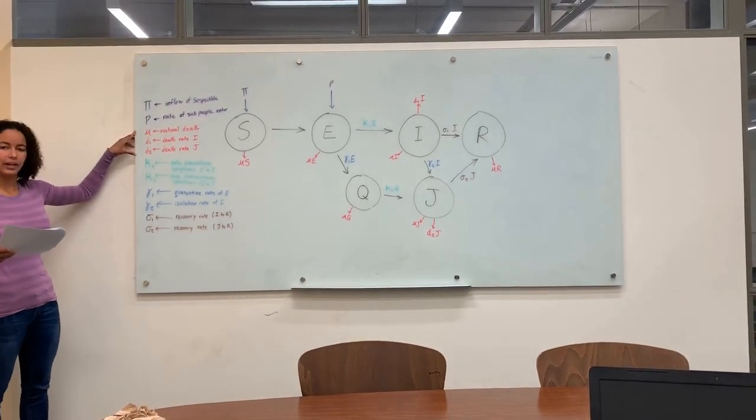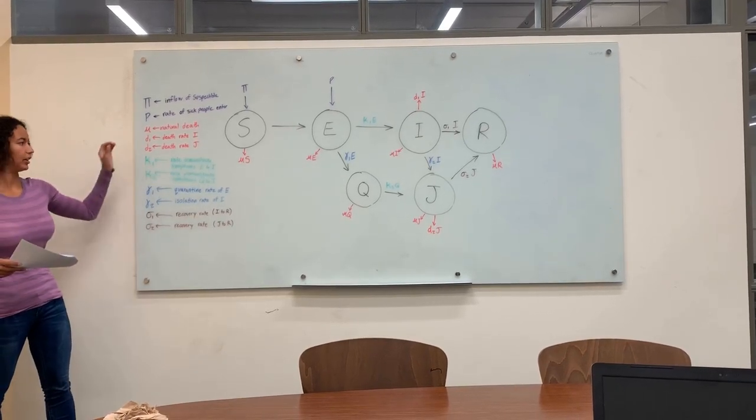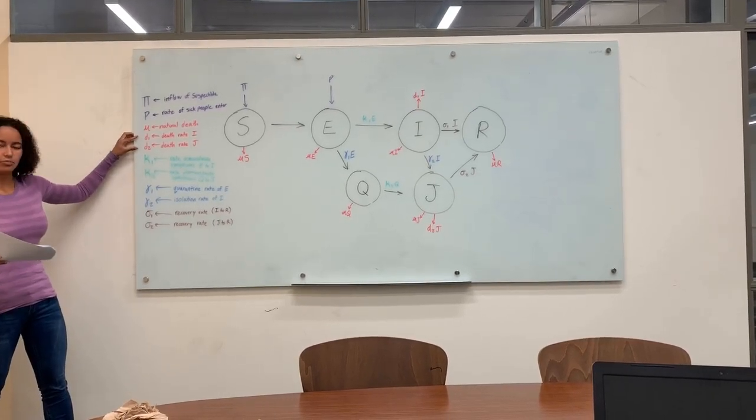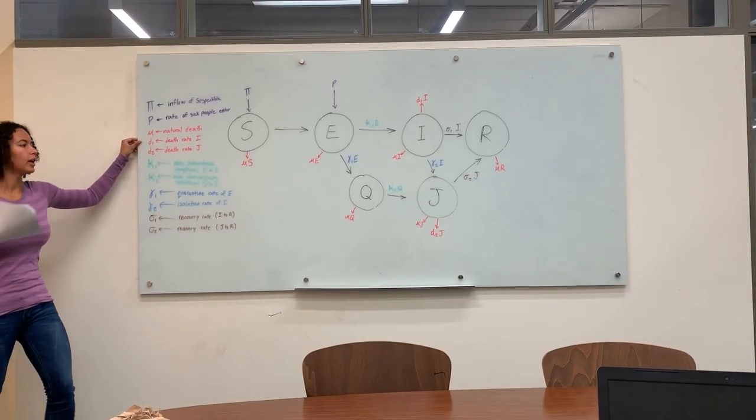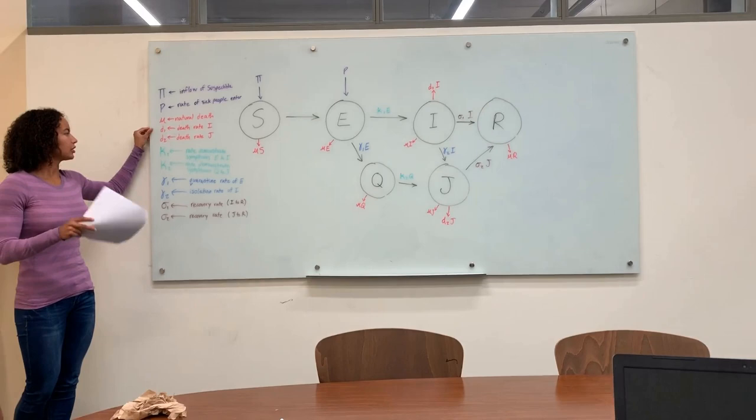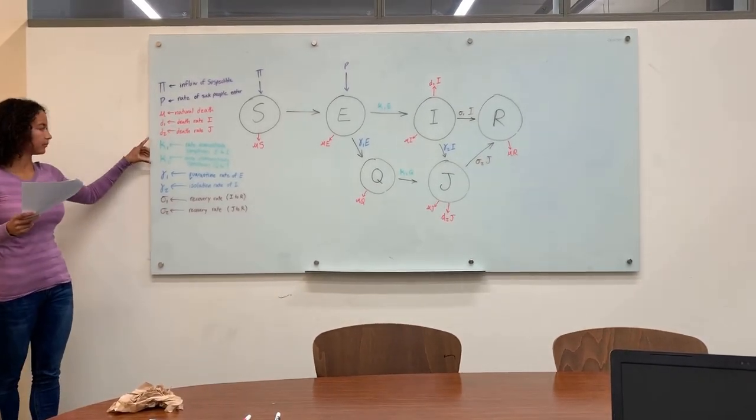Next, in red, we have the death rate. Mu is the natural death rate and that occurs in every subpopulation. Then we have D1 and D2. D1 is the death rate of the symptomatic individuals. D2 is the death rate of the isolated individuals.